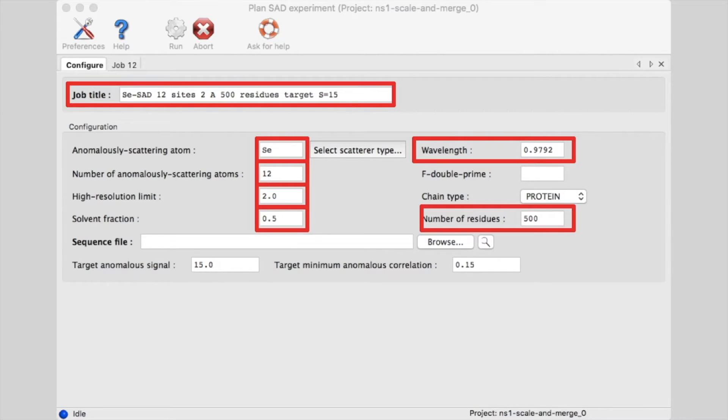Now a key parameter in Plan SAD Experiment is the target anomalous signal. The GUI is going to try and achieve the target anomalous signal you specify by adjusting the I over sigma of the data to be collected. If you specify a high anomalous signal, it will require more accurate data than a low one.